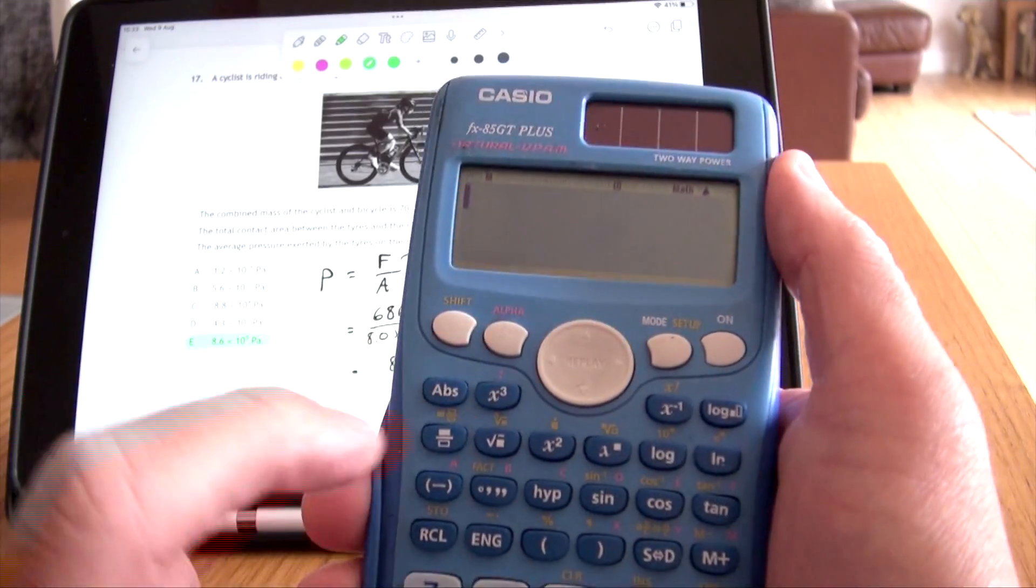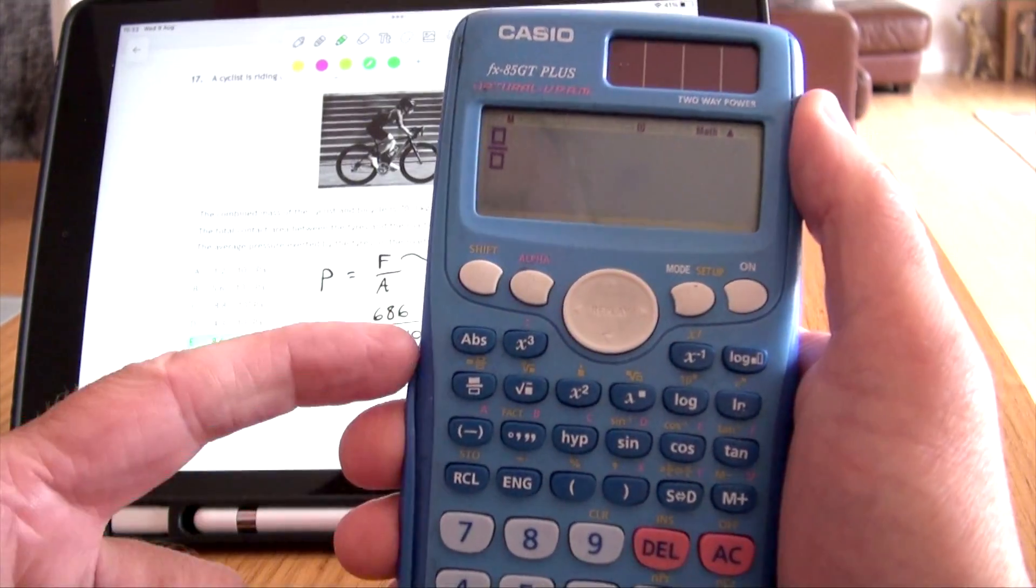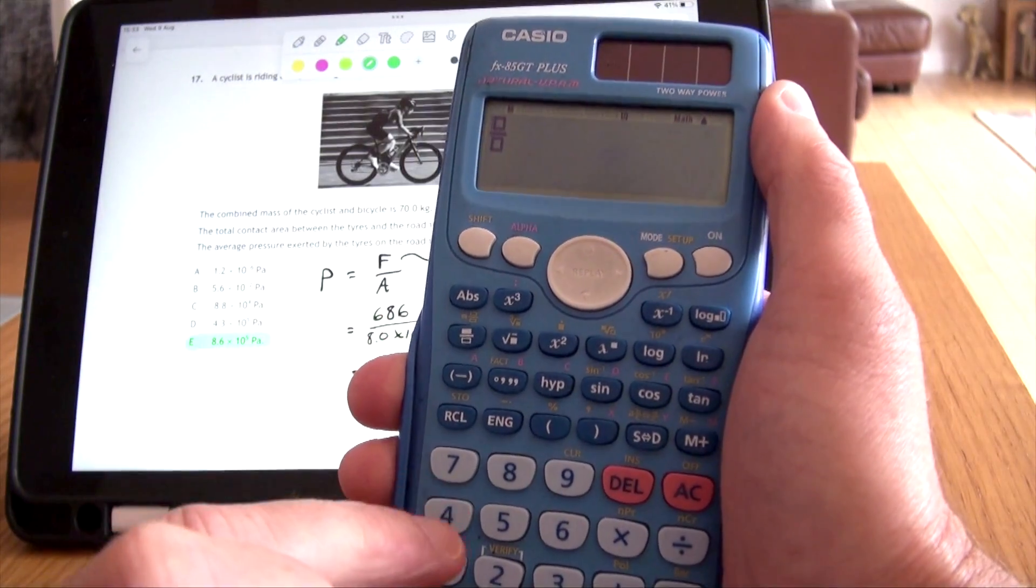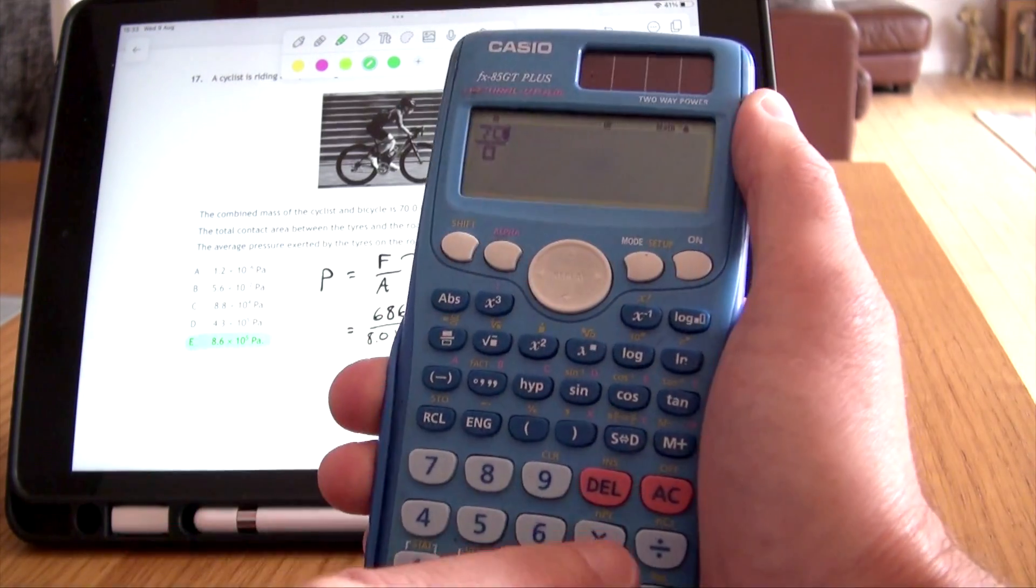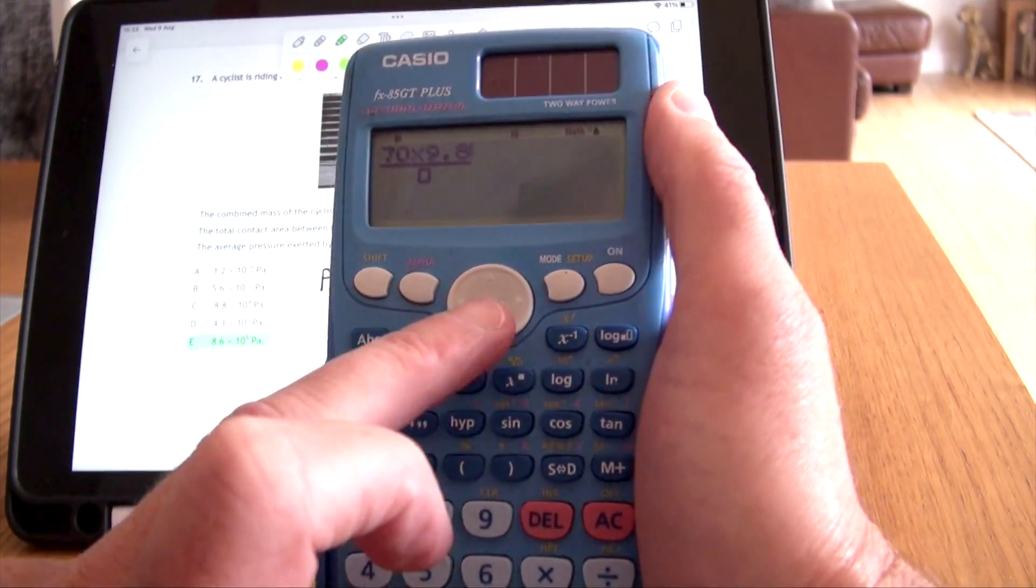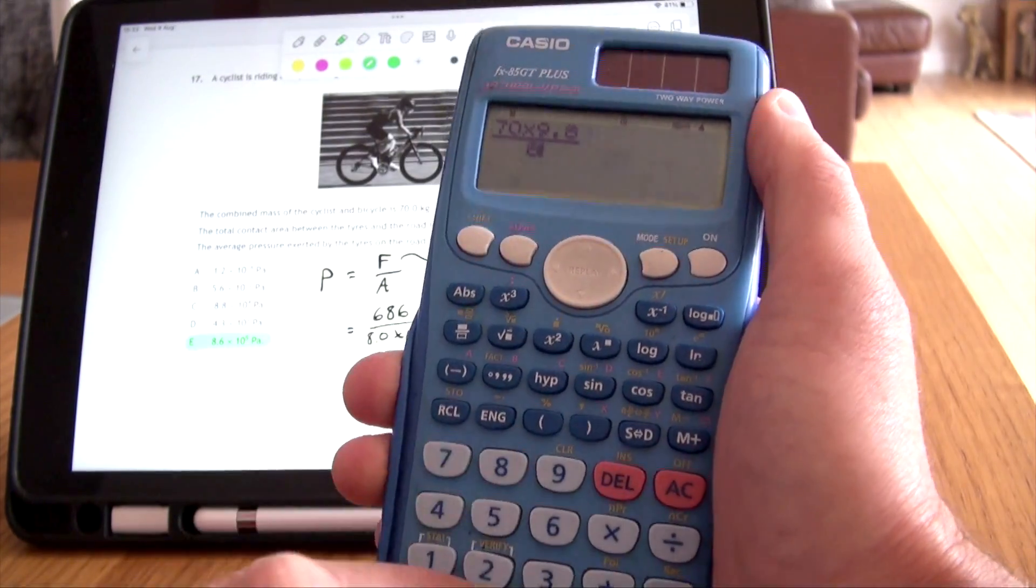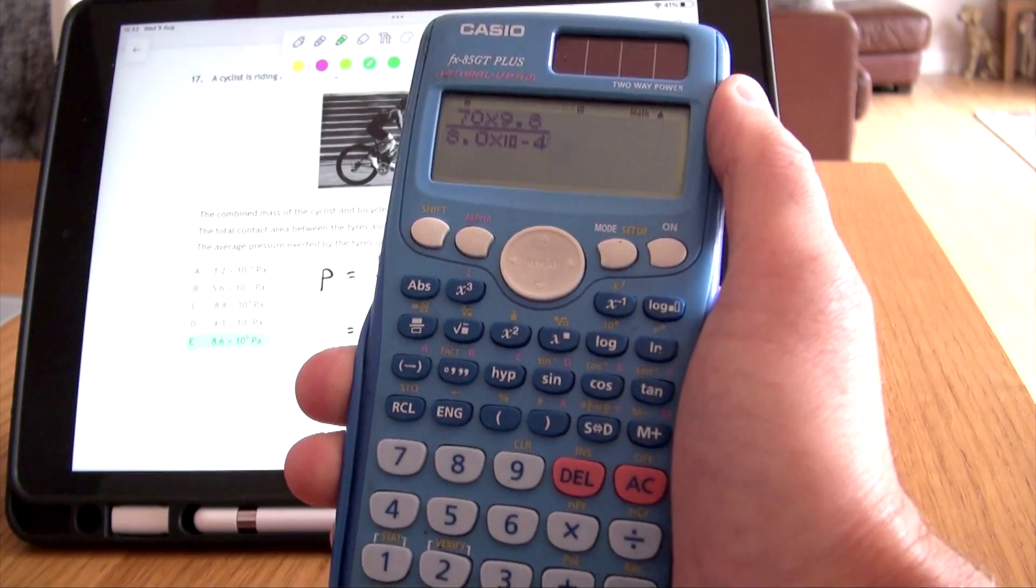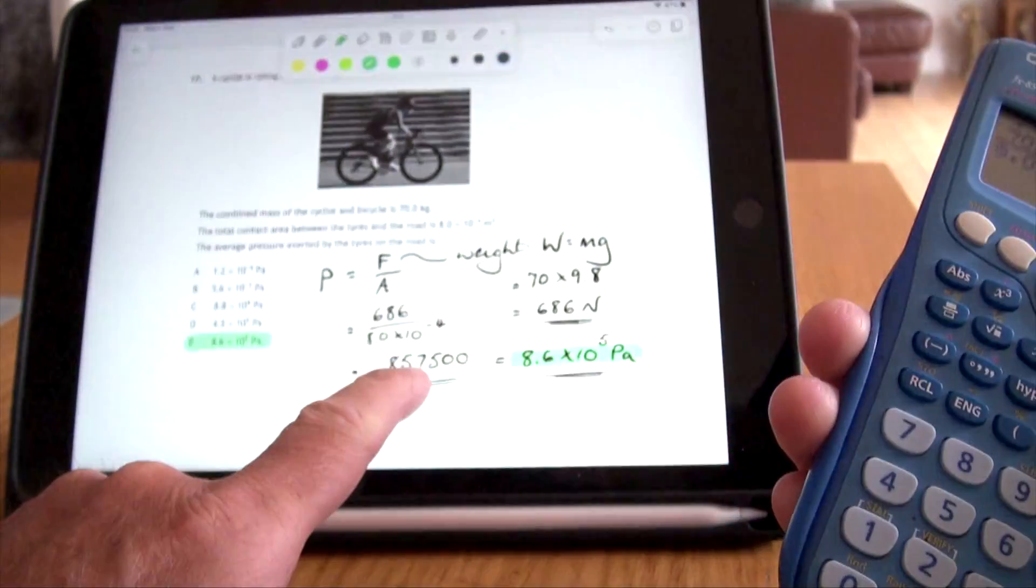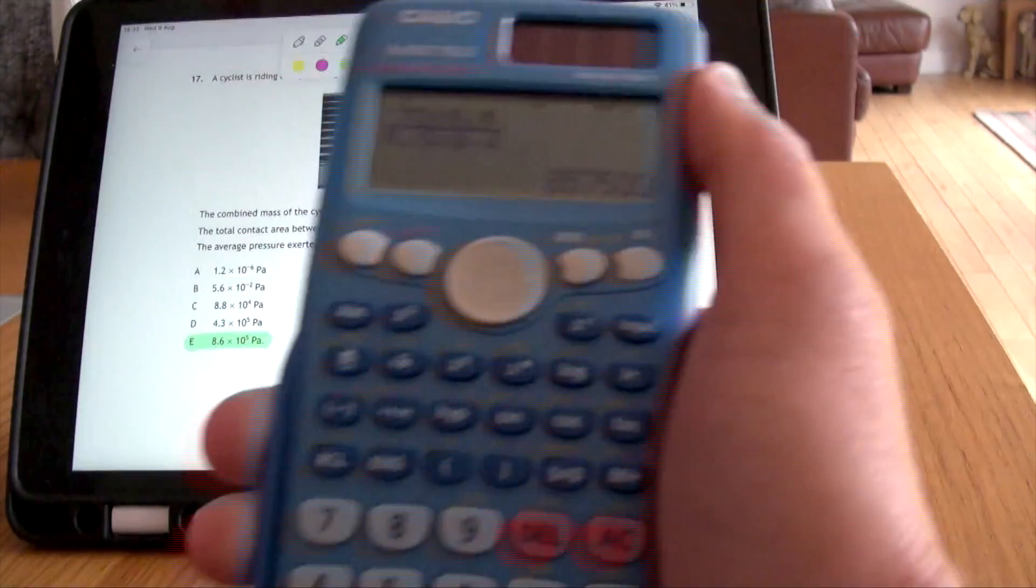Alternatively, there's the fraction button. You can do it using the fraction button, which was there originally on the calculator. I can do the mass, 70 times gravity, 9.8, divided by the 8.0 times 10 to the minus 4, and there's my answer, 857500. All good.